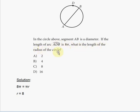They're saying that ADB, the length of ADB is 8π, and AB is a diameter. So since AB is a diameter, it passes through the center of the circle.